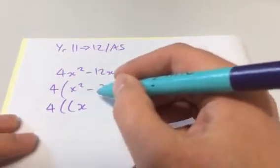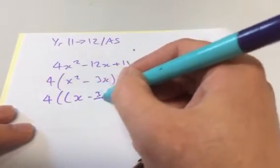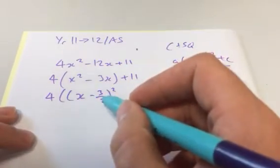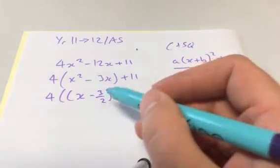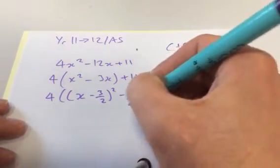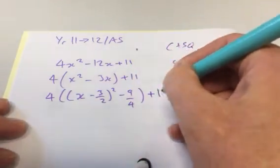So x, remember I have to halve that, and that's what I'm going to square. But then when I expand that, I'm going to get 9 over 4, which I don't want. So I have to get rid of that 9 over 4, and I've still got the 11 on the outside.